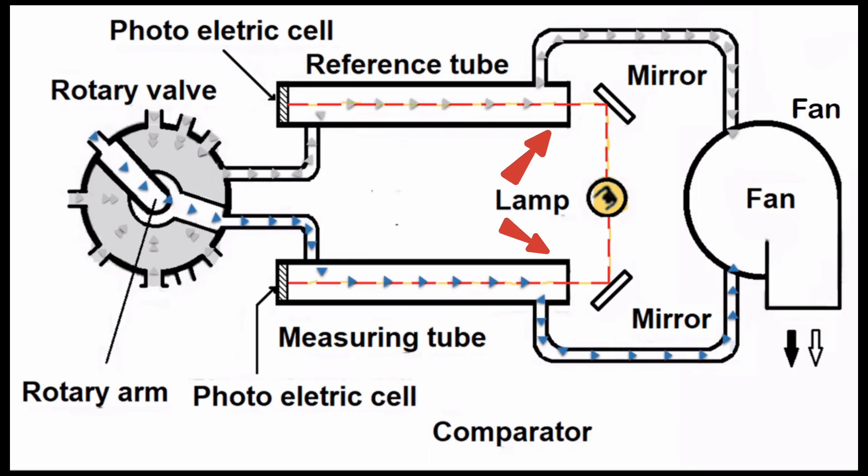The other ends of both the tubes are sealed by fitting lenses that allow light to pass through them. Equal intensity of light is reflected on the photoelectric cells using a lamp. Light passes through the lenses after being reflected by mirrors.